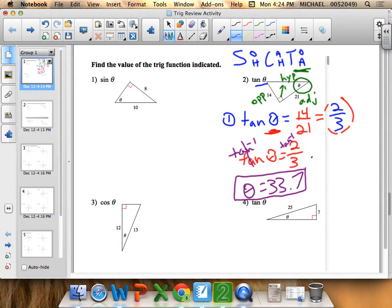Same process. So to reiterate: I identified where theta was, I labeled my right triangle in reference to theta, then I noticed that tangent is opposite over adjacent, and then I solved for theta after I got my ratio.